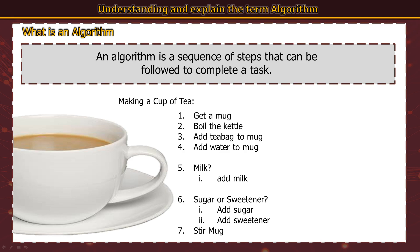You use algorithms every day and complete them without even realising. The example here is making a cup of tea — a set of steps to complete a task: get a mug, boil the kettle, add a tea bag, add the water, add milk (a decision — yes or no), sugar, sweetener or neither, then stir the mug. Looking at those instructions, I've missed the step of taking the tea bag out of the mug. This is one of the key advantages of algorithms — it enables you to spot a step you've forgotten.